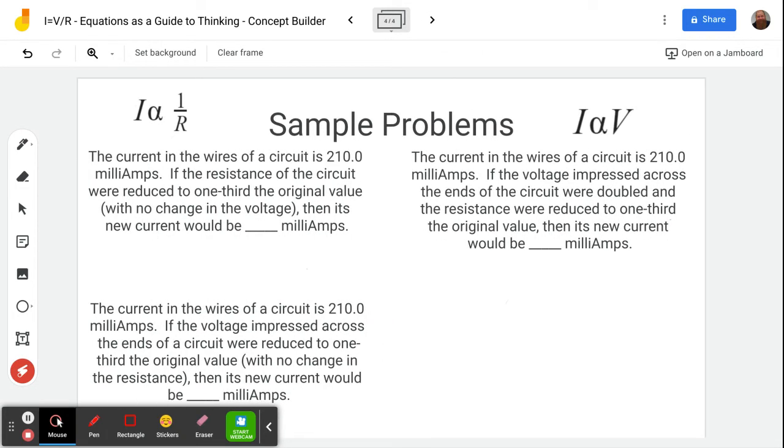Let's get to some examples. We see the current in the wires of a circuit is 210 milliamps. If the resistance of the circuit were reduced to one-third, so we had the resistance changing here, and it changed to one-third. We divided the resistance by three, and there's no change to the voltage.